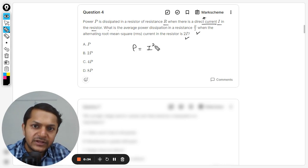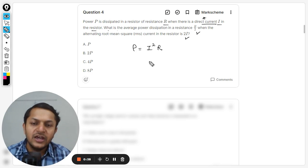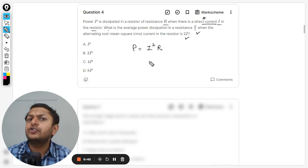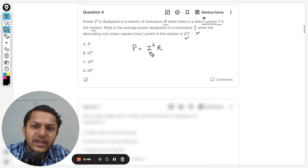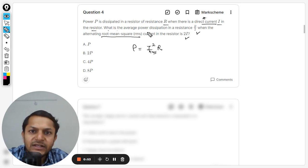We know that the I square R formula is only for direct current. We cannot use this formula for alternating current, but if you want to use it for alternating current, we can use this formula only for the RMS values. And this question talks about the RMS value only.